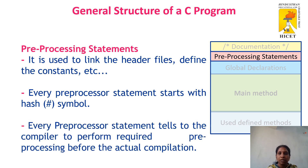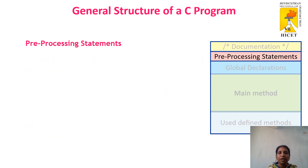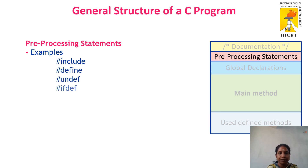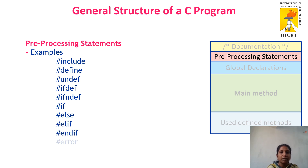Each pre-processor statement tells the compiler to perform the required pre-processing functions before the actual compilation. Some examples of pre-processing statements are: #include, #define, #undef, #ifdef, #ifndef, #if, #elif, #endif, #error, and #pragma. These are some of the pre-processing statements we use inside a C language.